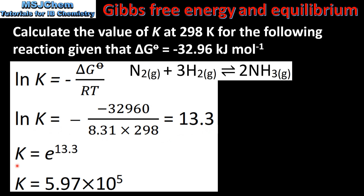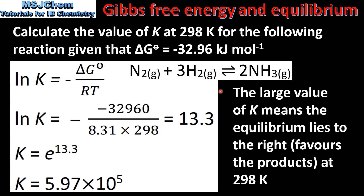So K is equal to e raised to the power of 13.3, which gives us a value for the equilibrium constant K of 5.97 × 10⁵. The large value of K means the equilibrium lies to the right — it favors the products — at 298 Kelvin.